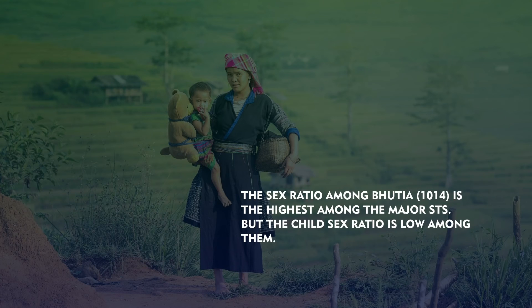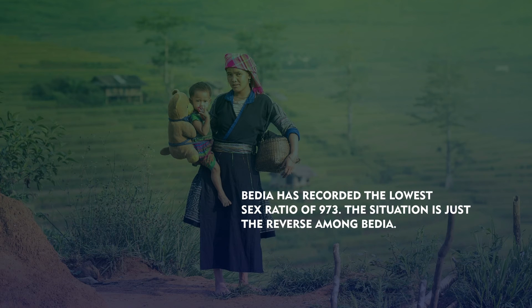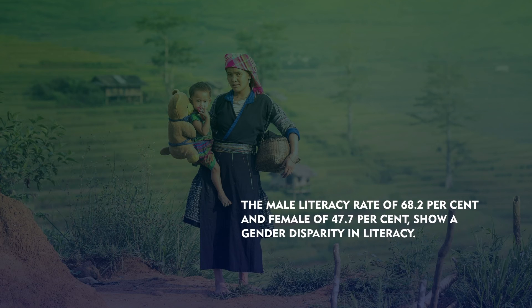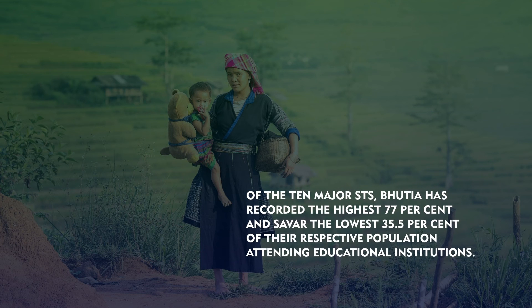Present scenario of tribes in West Bengal: As per the 2011 census, the demographic profile of the tribes in Bengal shows that the sex ratio of total ST population in the state is 999 which is higher than the national average of STs 990. The sex ratio among Bhutia is the highest among the major STs but the child sex ratio is low among them. Badia has recorded the lowest sex ratio of 973. Among all STs of Bengal, the literacy rate of 57.9 percent of the population has been recorded as literate, which is lower than the national average. The male literacy rate of 68.2 percent and female of 47.7 percent show a gender disparity in literacy. Of the 10 major STs, Bhutia has recorded the highest 77 percent and Savar the lowest 35.5 percent of their respective population attending educational institutions.